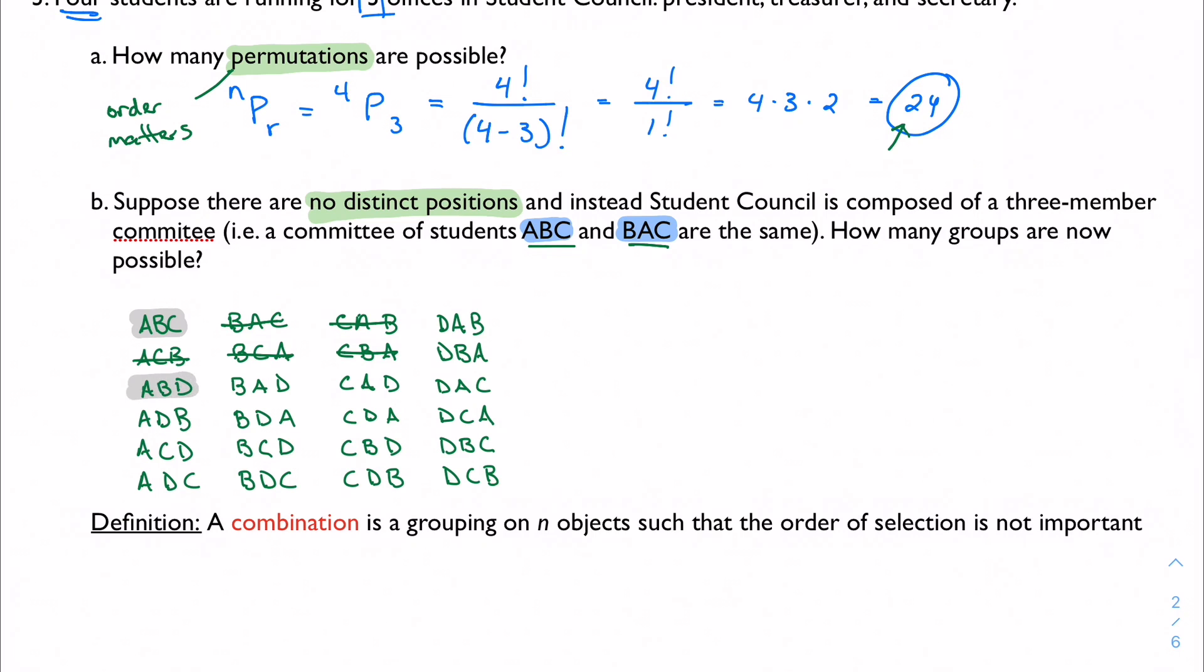Following your algorithm here, the next one is A, B, and D. So anything with A, B, and D in it is going to go away. A, C, and D. And now anything with A, C, and D in it is going to go away. And now B, C, and D. And I'm left with four distinct groups.